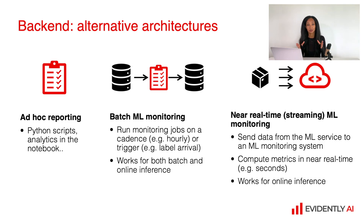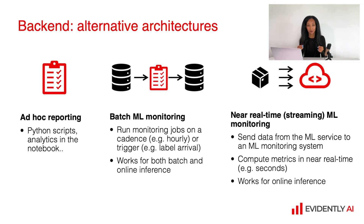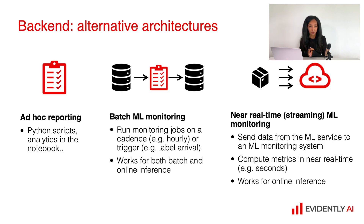Even if you do not have enough resources to build either batch or near real-time monitoring, you still can do something. At least you can start from ad hoc reporting. You can write a Python script which helps you perform some analytics — for example, metric calculations, test calculations, or maybe add some visualizations — and run it on your own cadence, for example after each batch, daily, or weekly. This will help you build some observability of your machine learning system and log historical information on performance and data quality. It is still much better than doing nothing, so do not reject ad hoc reporting at the very beginning. This is a nice start.